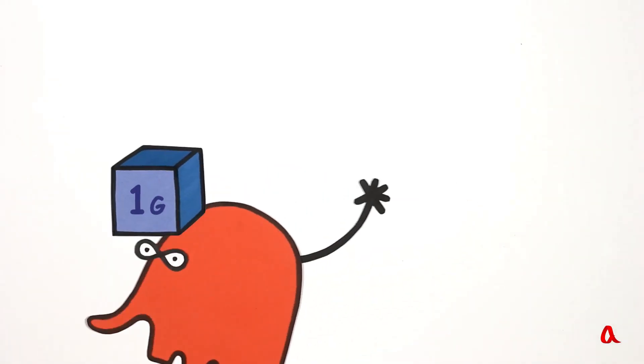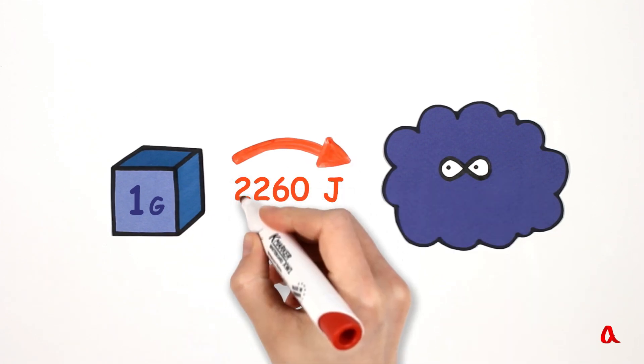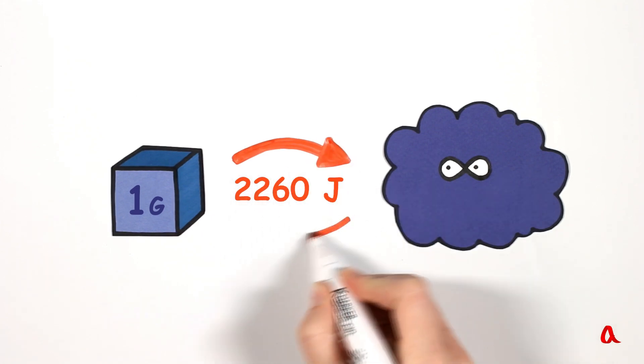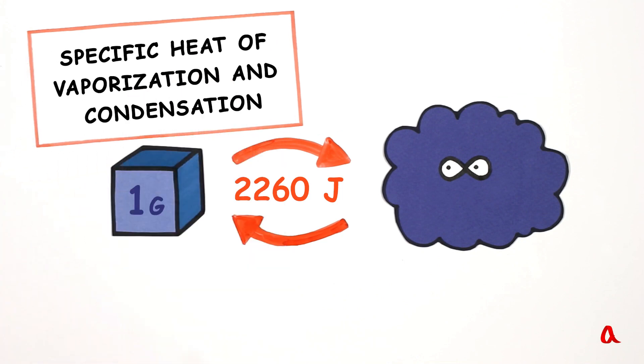To evaporate one gram of water, we have to use 2260 J of energy. Just as much energy is released at the condensation of one gram of water vapor. This energy is designated as specific steam generation and condensation heat. Specific, in this case, means per mass unit.